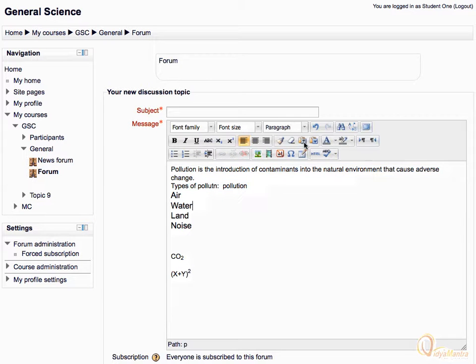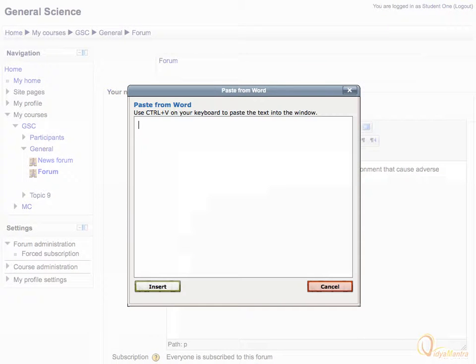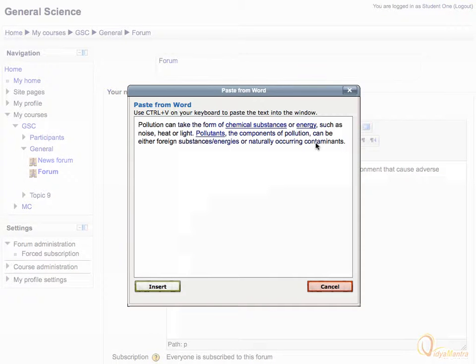You can also paste anything in the text format by using the button paste as text. You can also paste any text from programs like MS Word or similar to it by using the button paste from Word. Copy the text in Word and paste it here, and click insert.